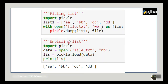For unpickling, we use the traditional method: file = open('file.txt', 'rb'), then take a variable and assign it pickle.load(file_handler), then print that variable — it will come back in the same format as it was stored.